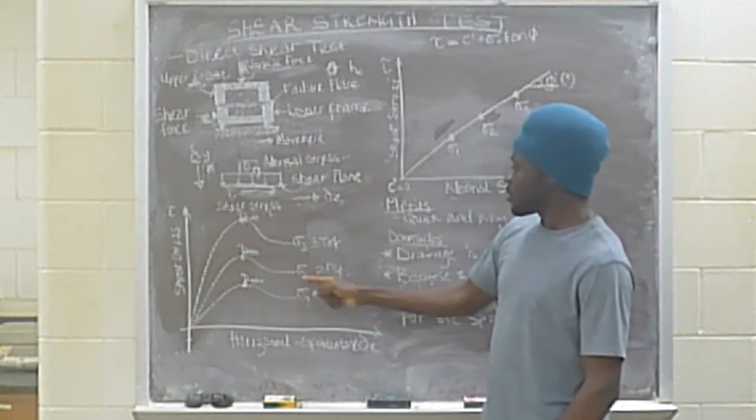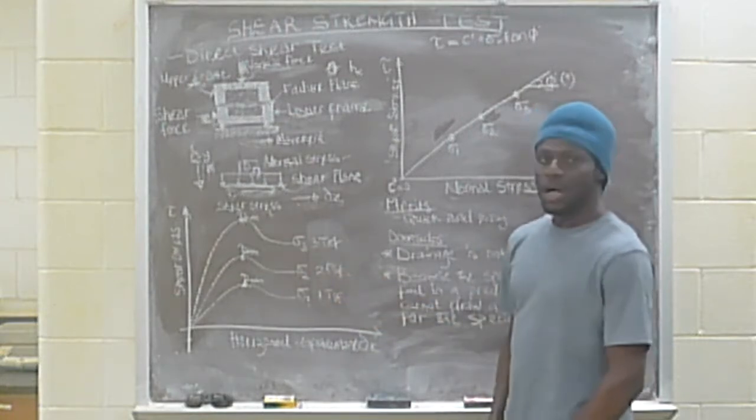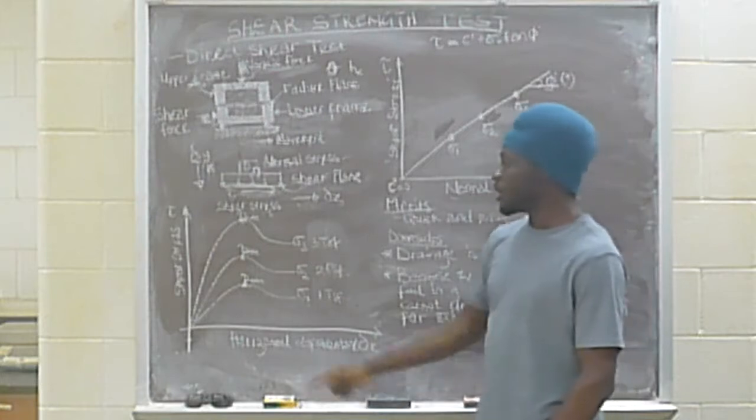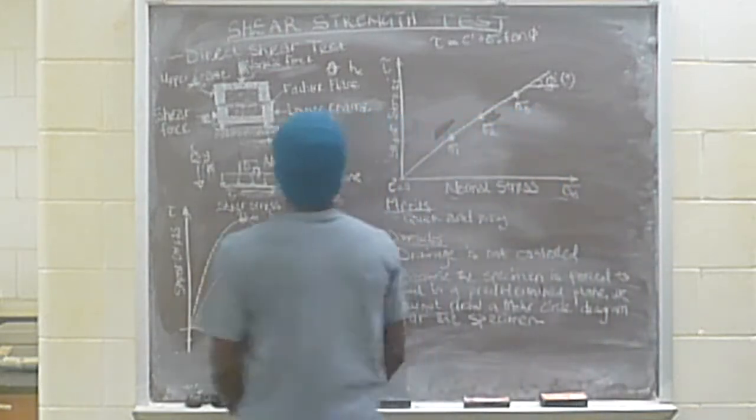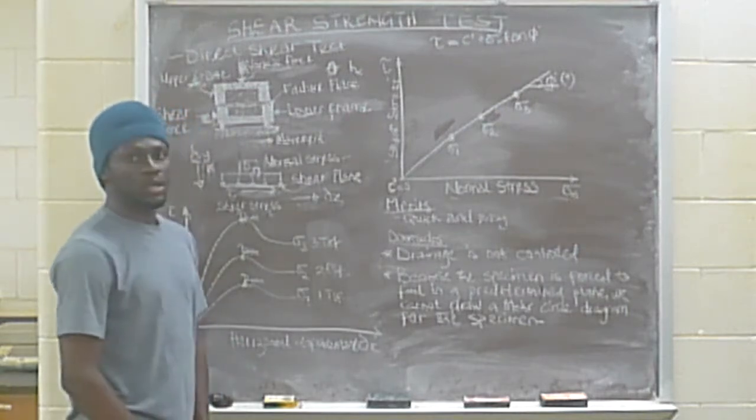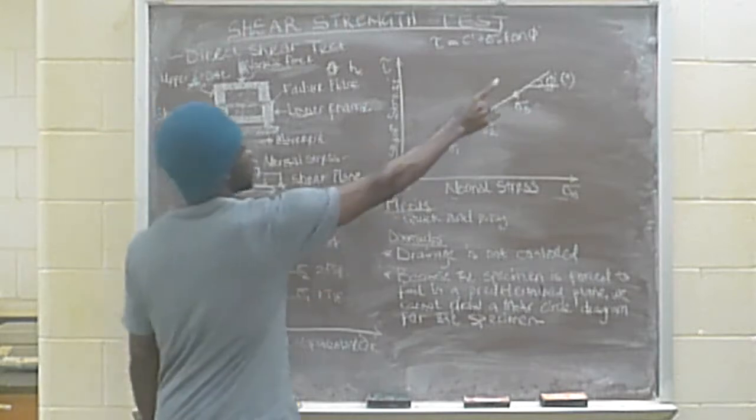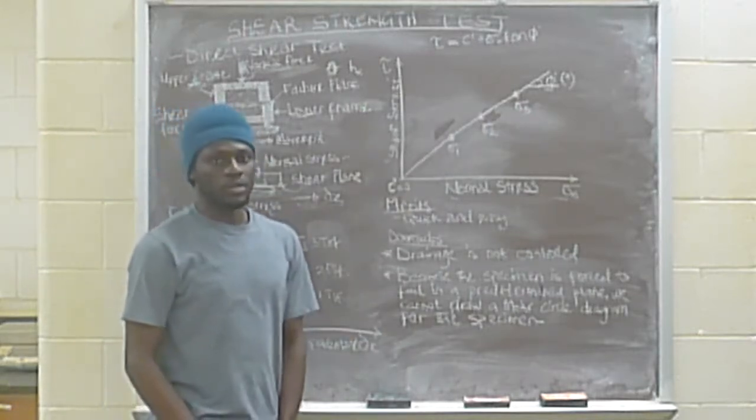We run this test at different normal stresses, typically 1 TSF, 2 TSF and so on. And for each of these normal stresses we record the values of the peak shear stress. With these values of peak shear stress we plot a graph of shear stress versus normal stress. This will be a straight line graph that goes through the origin for cohesionless materials and the slope will be the angle of internal friction.